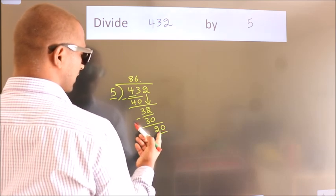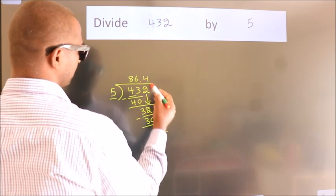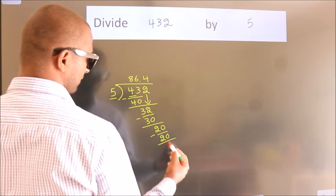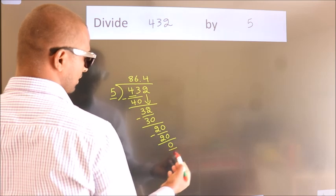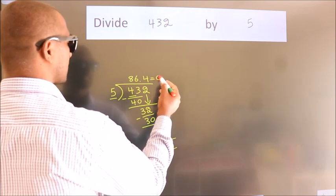When do we get 20 in the 5 table? 5 times 4 equals 20. Now we subtract. We get 0. We got remainder 0. So this is our quotient.